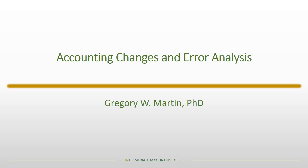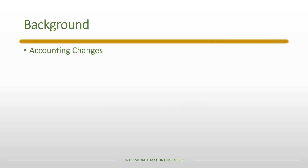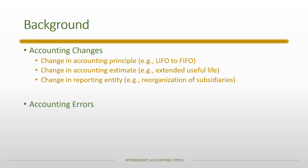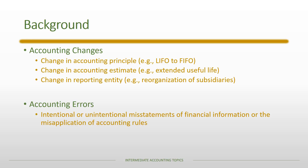This lecture covers accounting changes and error analysis. There are three types of accounting changes: first, a change in accounting principle, for example changing from LIFO to FIFO; second, a change in accounting estimate, such as extending the useful life on property, plant and equipment; and third, a change in reporting entity, which is basically a reorganization of the firm when it has subsidiaries. There are also accounting errors, which are intentional or unintentional misstatements of financial information.